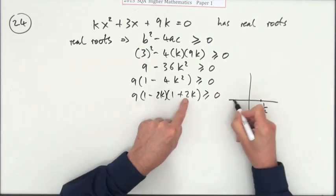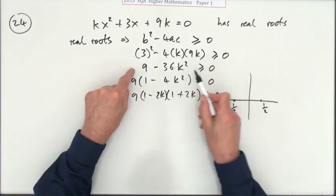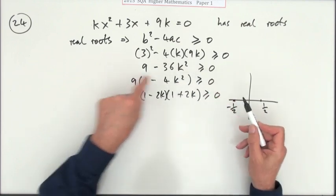And this says when k is negative a half, it would be equal to zero. So drawing this graph, which is the one I've used, I've not changed the signs around. I could have flipped the signs over. This is an upside down parabola, so it looks like this.